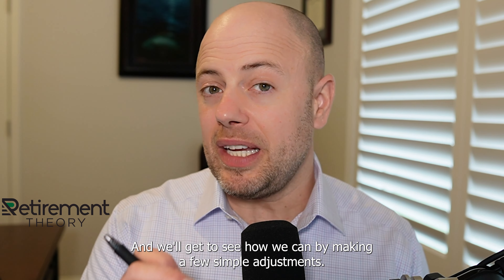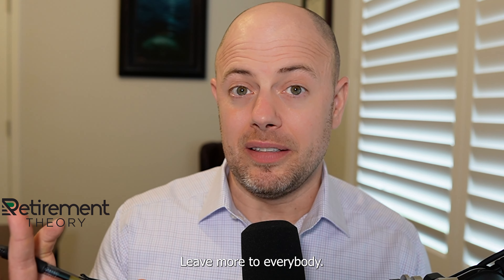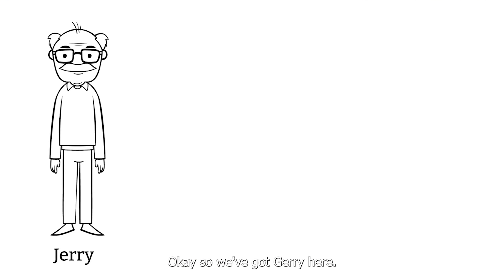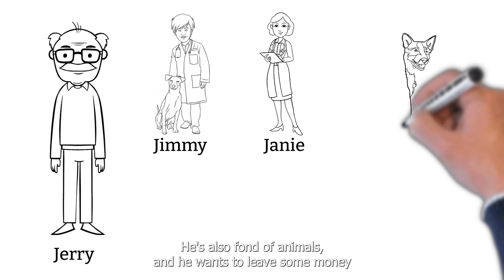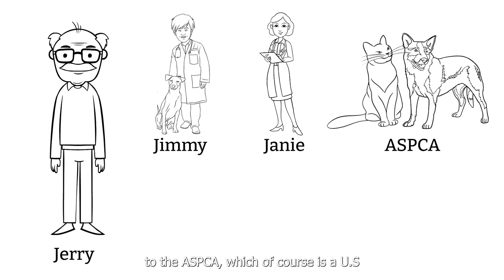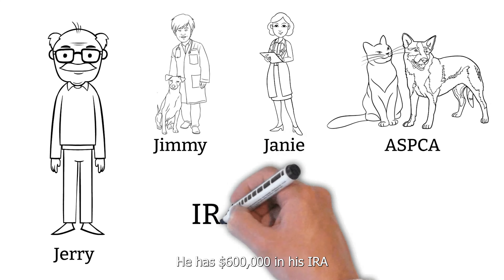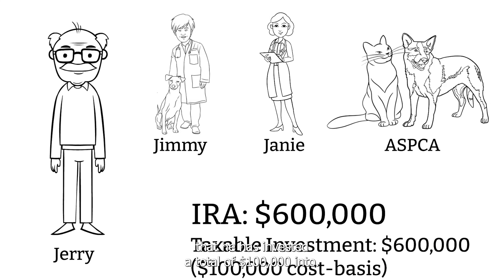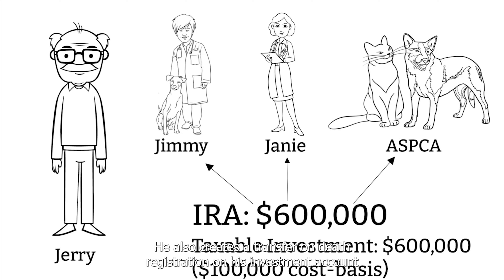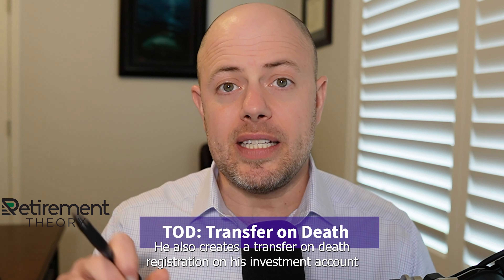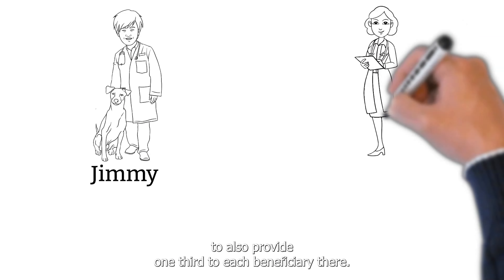We'll start with an example to see how, by making a few simple adjustments, we can leave more to everybody — well, except maybe the IRS. Jerry has two children, Jimmy and Janie, and wants to leave equal inheritances. He also wants to leave money to the ASPCA, a US charitable organization under 501(c)(3). He has $600,000 in his IRA and $600,000 in a taxable investment account he invested $100,000 into. He decides to leave each beneficiary one third, updating his IRA beneficiaries and creating a transfer-on-death registration on his investment account accordingly.